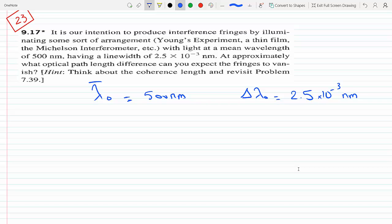In other words, we need to figure out the coherence length, because that would be the optical path length difference where the fringes will actually vanish.